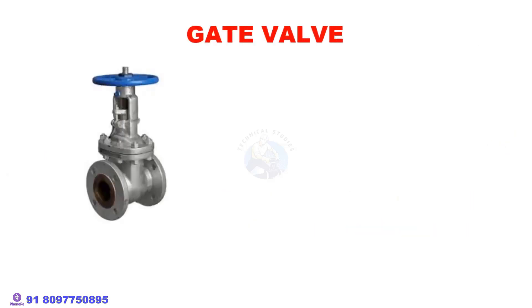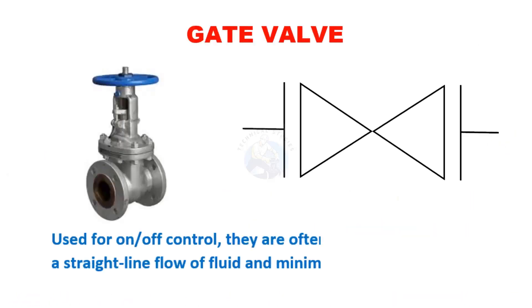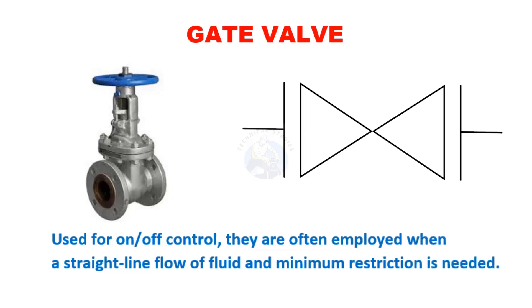The first one is the gate valve. Gate valves are used for on and off control. They are often employed when a straight-line flow of fluid and minimum restriction is needed.